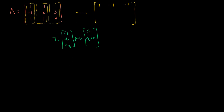Let me write that in my transformation: I'm going to replace the second row with the second row plus the first row. Minus 1 plus 1 is 0. 2 plus minus 1 is 1. 3 plus minus 1 is 2. We also want to get a 0 here, so let me replace my third row with my third row minus my first row. So 1 minus 1 is 0, 1 minus minus 1 is 2, 4 minus minus 1 is 5.